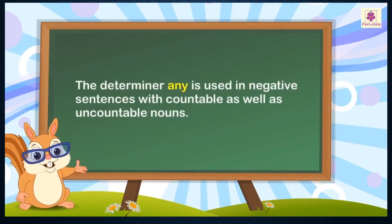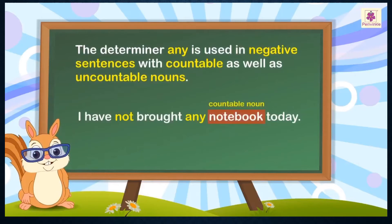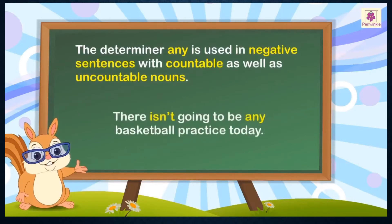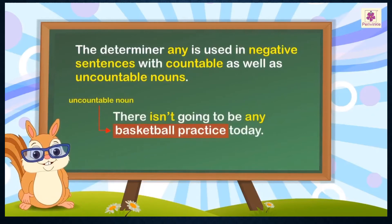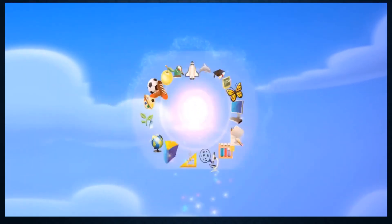The determiner 'any' is used in negative sentences with countable as well as uncountable nouns. For example: I have not brought any notebook today. There isn't going to be any basketball practice today. I hope that the animation video has made it easier for you to recollect everything that we have studied about countable and uncountable nouns.